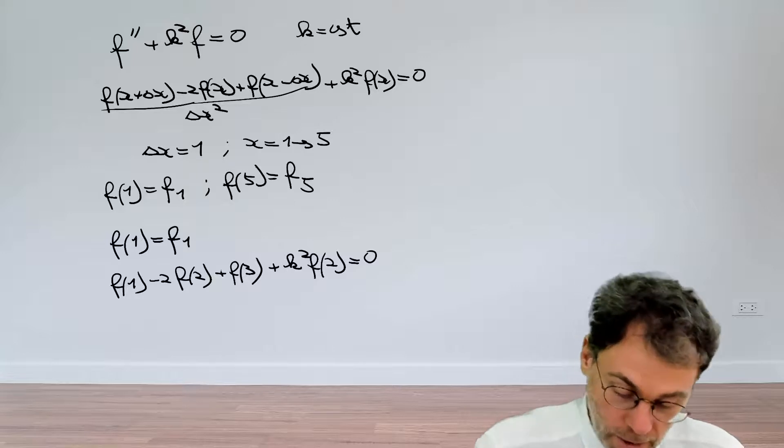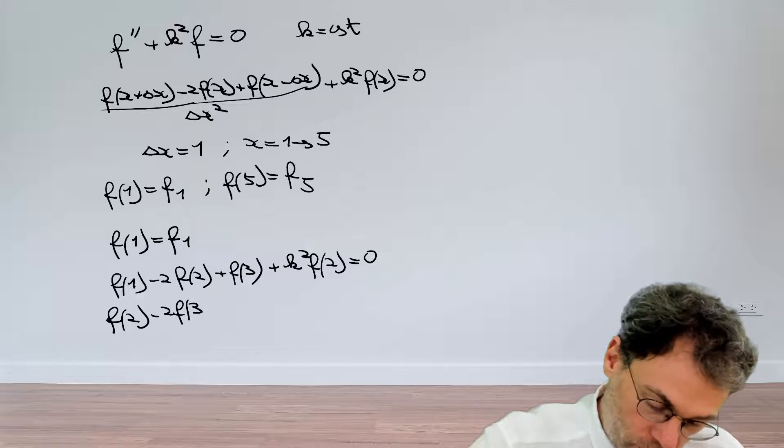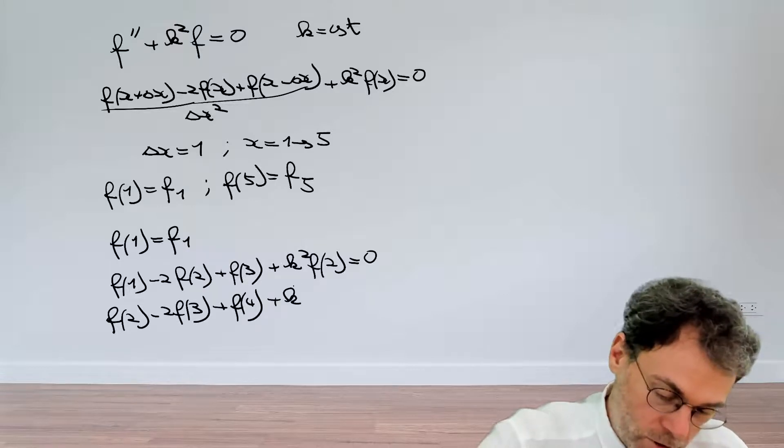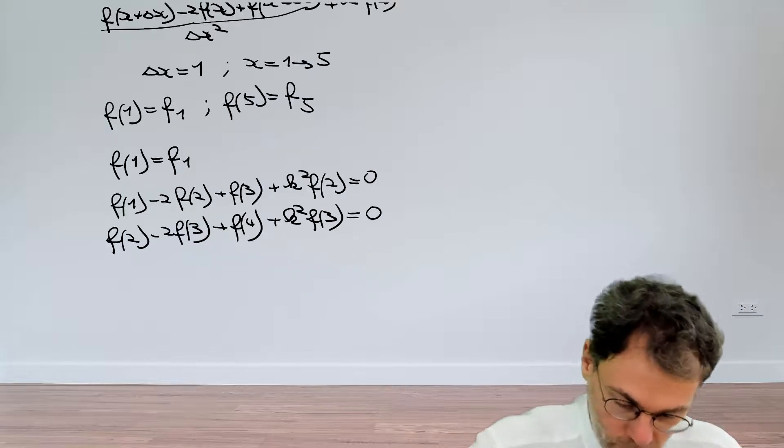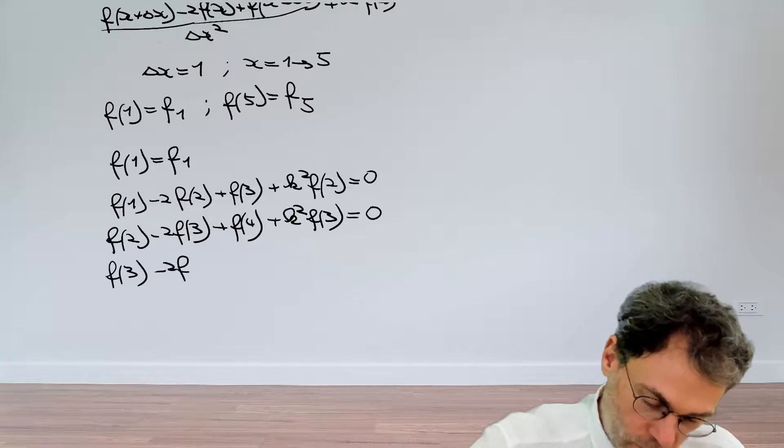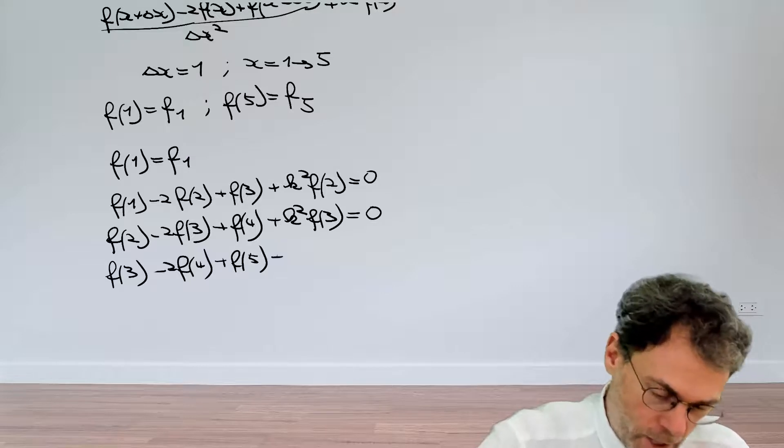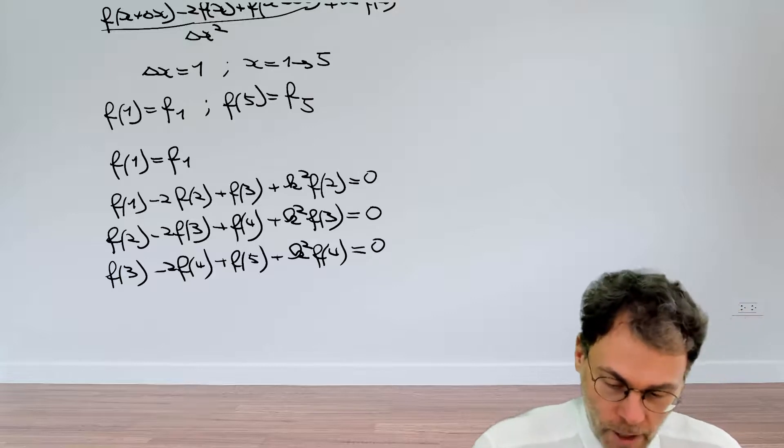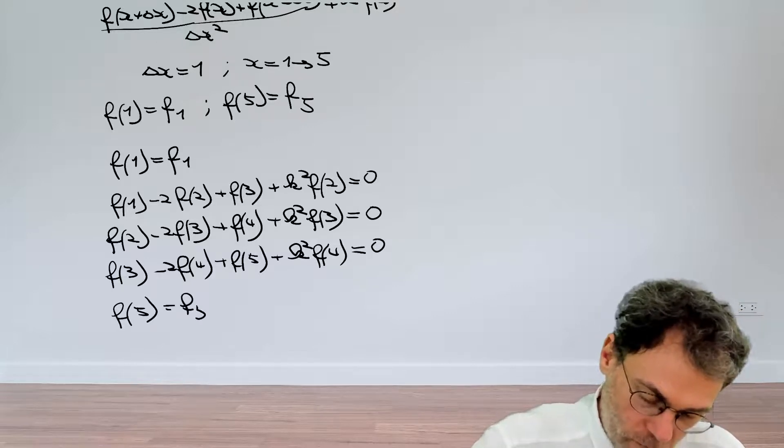And then we repeat that two more times: f2 minus 2f3 plus f4 plus k squared f3. And then once more because this is so much fun, f3 minus 2f4 plus f5 plus k squared f4 is equal to 0. And then we have the freebie f5 equal to f5.